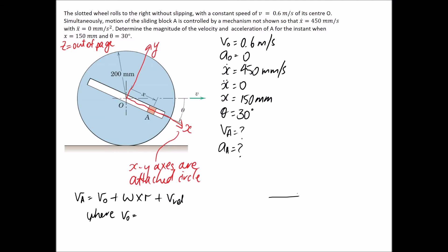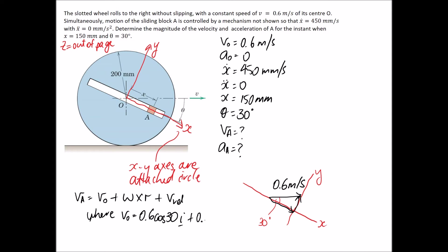For the velocity of point O, we need to define the 0.6 m/s vector along our rotated x and y axes. Drawing a diagram: the 0.6 m/s vector is horizontal, and the x-axis sits at 30 degrees to the horizontal (the same as theta). Doing vector addition, the x-component is 0.6 cos30 in the positive i direction, and the y-component is 0.6 sin30 in the positive j direction, giving 0.52i + 0.3j.